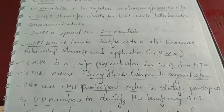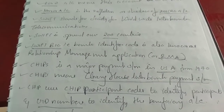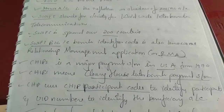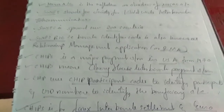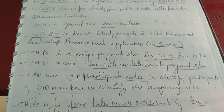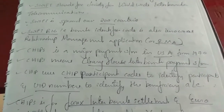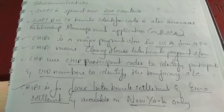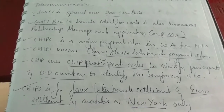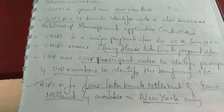CHIPS is a major payment system in USA from 1970. CHIPS means Clearing House Interbank Payment System. CHIPS uses CHIPS participant codes to identify participants and UID numbers to identify the beneficiary account. CHIPS is for Forex Interbank Settlement and Euro Settlement, and is available in New York only.